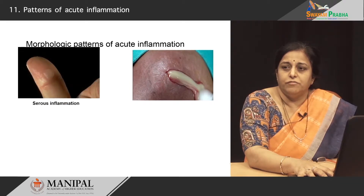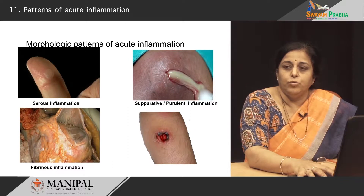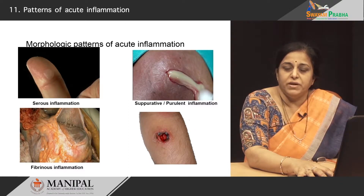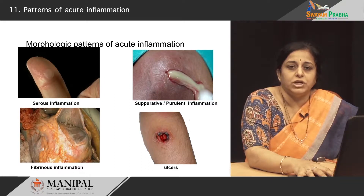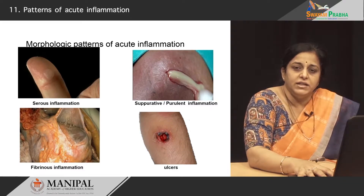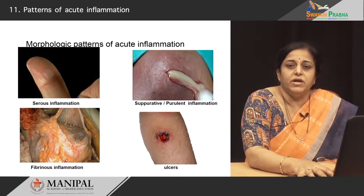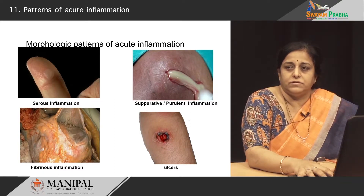So these are the four types we just learned: it could be serous inflammation, fibrinous inflammation, suppurative inflammation where you have pus, or it could be an ulcer. All these are different morphological appearances of inflammation in various tissues when there is injury by various different kinds of agents.